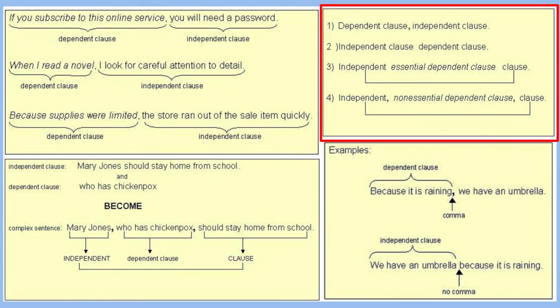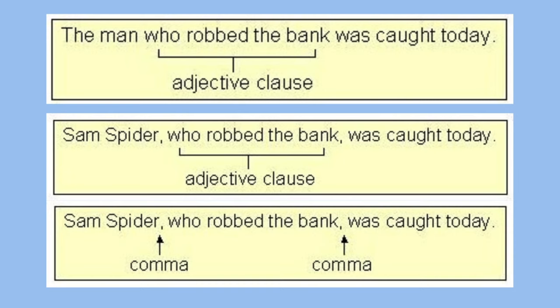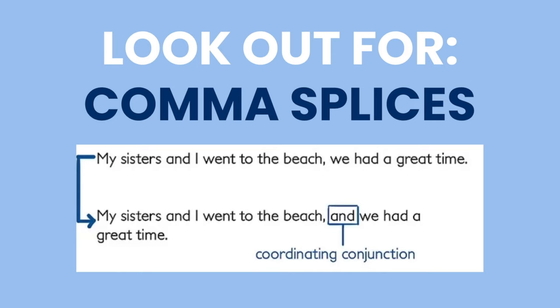Let's go a bit more into depth about what an essential clause is. 'The man who robbed the bank was caught today' — 'the man was caught today' can stand alone as an independent clause. However, when you take out 'who robbed the bank,' you lose clarity and important information. So this is considered an essential clause, and there are no commas surrounding it. However, in 'Sam Spider, who robbed the bank, was caught today,' the clause is surrounded by commas, because naming him as Sam Spider already gives context — so 'who robbed the bank' is not essential. Just know that with a non-essential clause, if you can take it out and the sentence still makes sense, commas are appropriate.